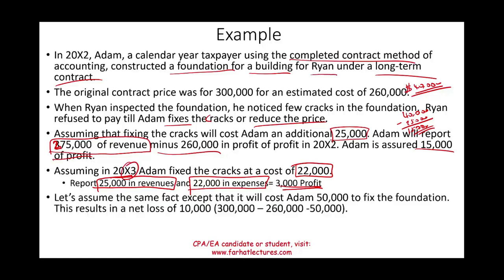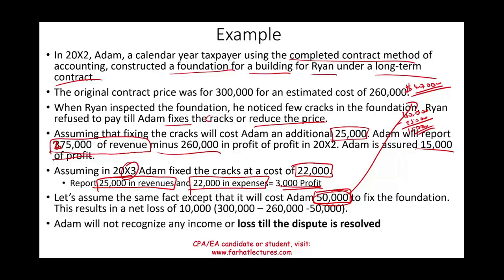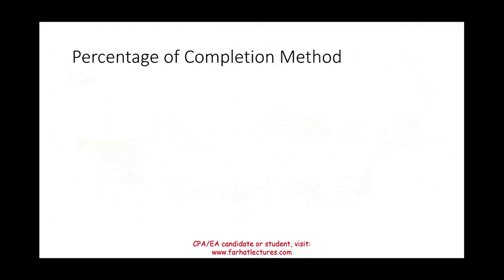Now assume the same facts, except fixing the foundation would cost Adam $50,000. In that case, the repair cost wipes out all profit and produces a $10,000 loss. Under these circumstances, Adam waits until the dispute is resolved before recognizing the loss — assuming all other criteria are met — and then takes the $10,000 loss.